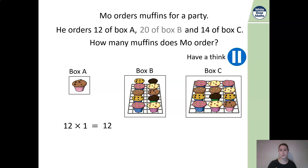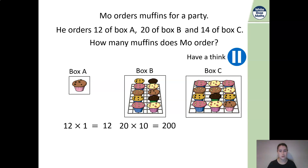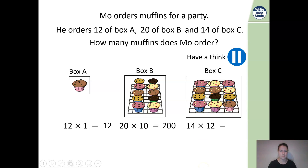He orders 20 boxes of box B, and in box B we can see there are 10. So we want 20 lots of those 10 boxes. We know that 2 times 1 is 2, adding our two zeros because they're both 10 times bigger — it's got to be 100 times bigger — so the answer is 200. For box C, Moe orders 14 boxes. I can see that each box has 12 muffins: counting up 4, 8, 12 or 3, 6, 9, 12. So I need 14 lots of 12.